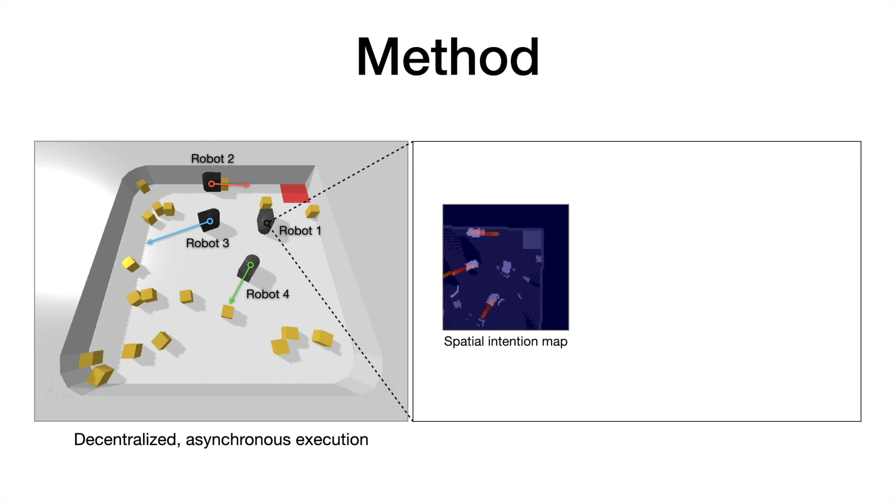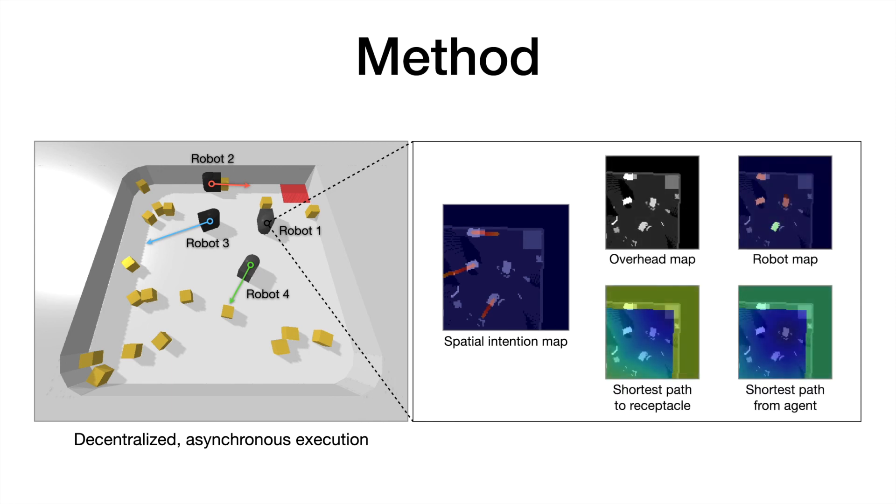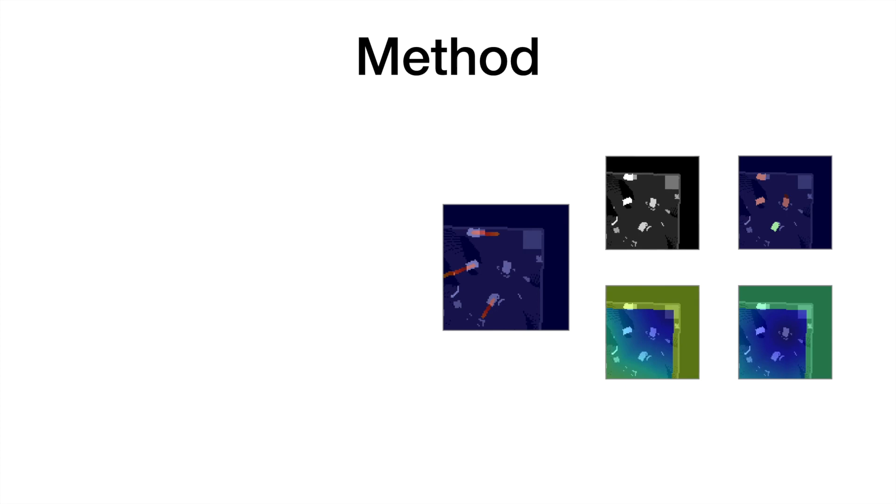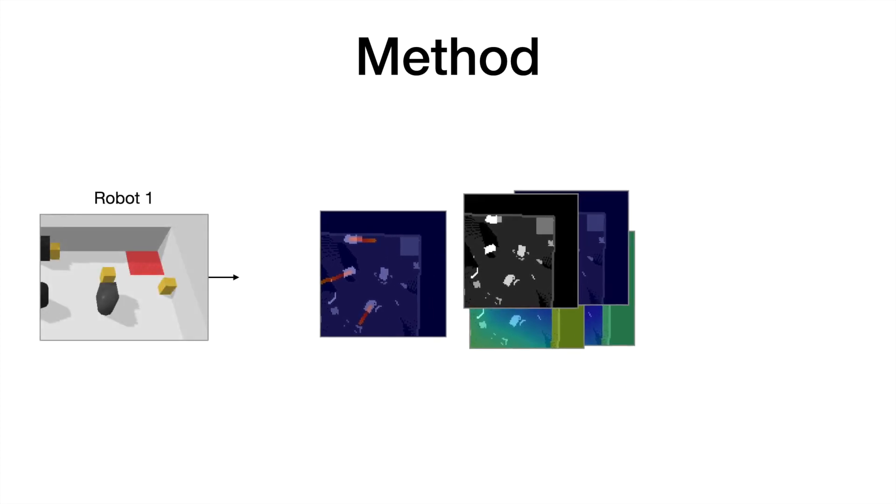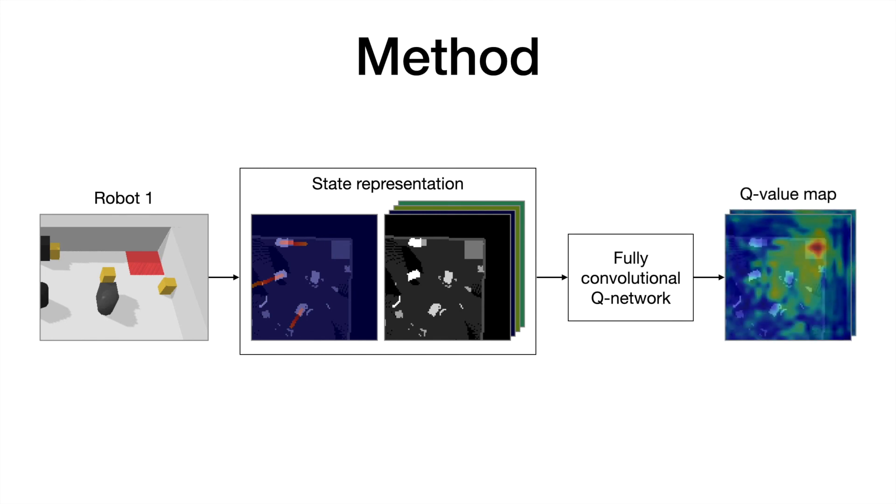In addition to the spatial intention map, our state representation also includes four other overhead maps, which encode useful information for the agent. All maps are spatially aligned with the visual observations. The state representation is input into a fully convolutional Q network, which outputs a dense Q value map. Then, the action with the highest Q value is selected and executed.